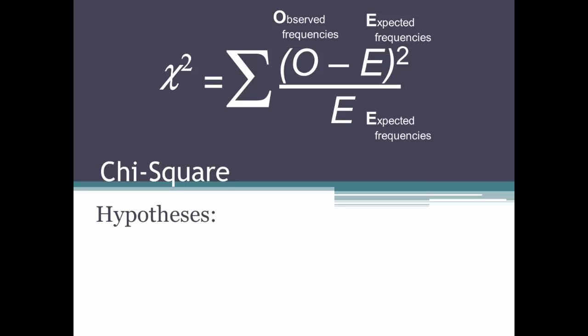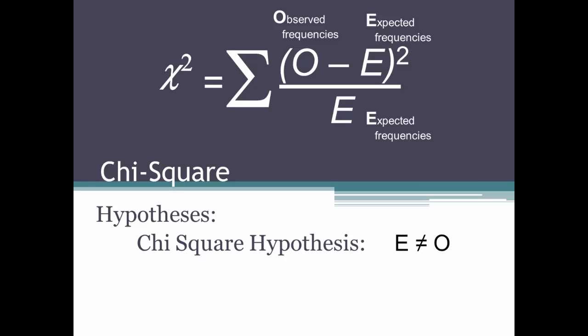You are using chi-square to test a hypothesis. The chi-square hypothesis is really the alternative hypothesis — you are hypothesizing that there will be a difference between what you observe and what you would expect to find if there were no differences in the data. In other words, the chi-square hypothesis is that the expected would not equal the observed frequencies. The null hypothesis would be that E equals O, or that there is no difference between what you would expect to find if all responses were equally distributed and what you did find or observed.